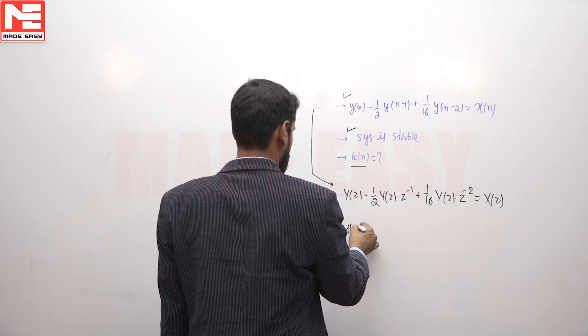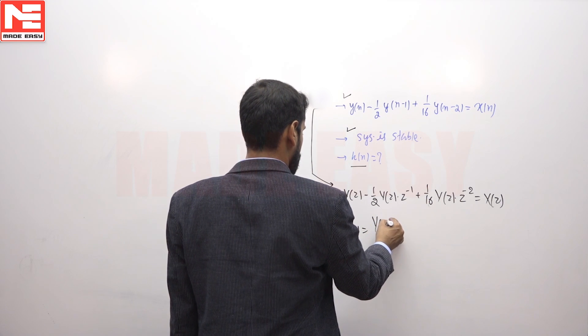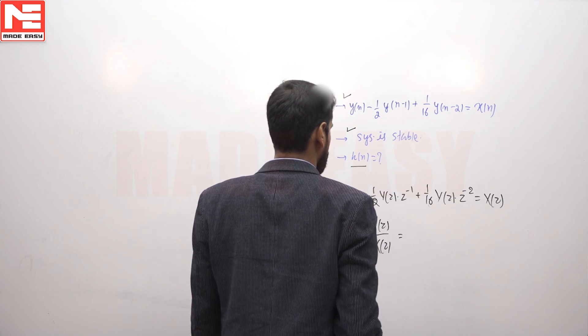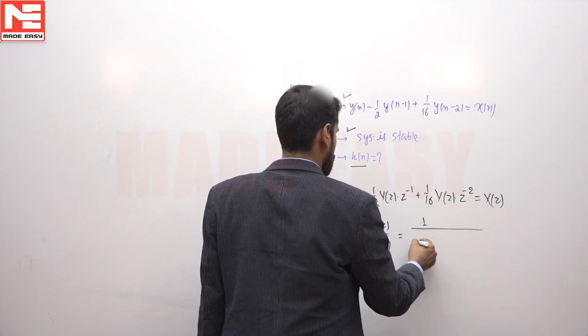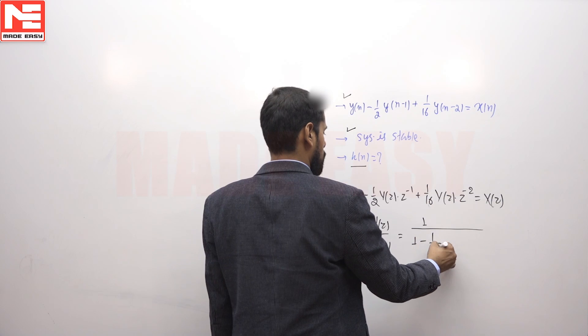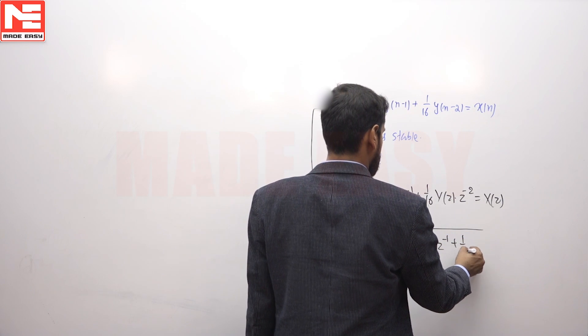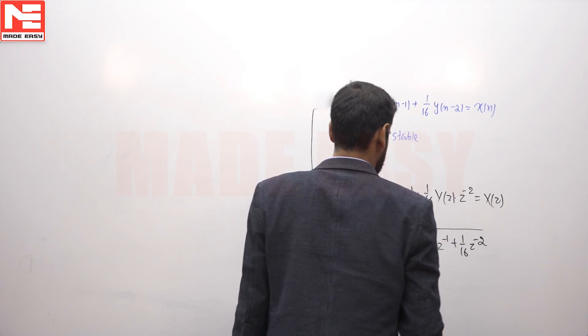Transfer function H(z), which is the ratio of y(z) upon x(z), will be equal to 1 upon 1 minus 1/2 z inverse plus 1/16 z raised to minus 2.